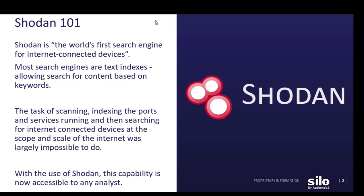To begin, we'll start off with Shodan 101. What Shodan is, is a search engine for the IoT, or Internet of Things. The Internet of Things is a vast network of internet-connected devices. Similar to other search engines you may be familiar with, Shodan functions so that the user can search for content based on keywords.